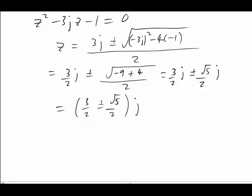At this stage, we need to investigate the size of those poles. Let's look at 3 halves plus root 5 over 2. Root 5, well, what's that? Very roughly 2 and a quarter, say.